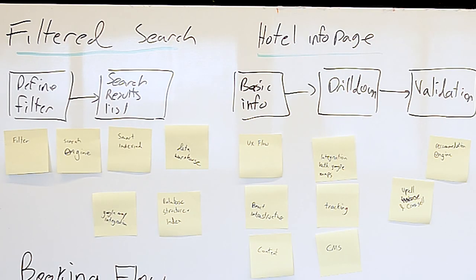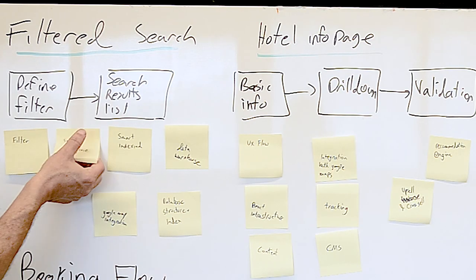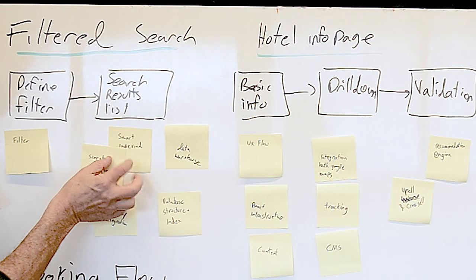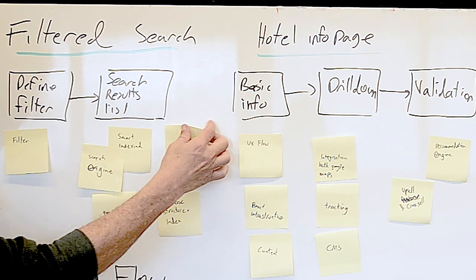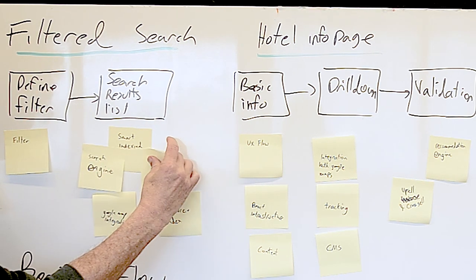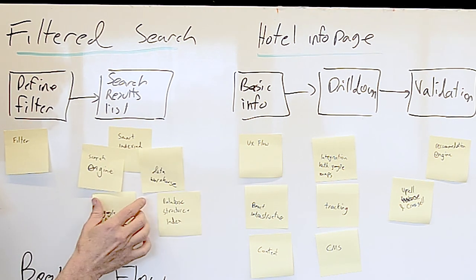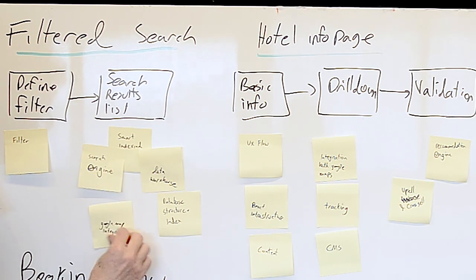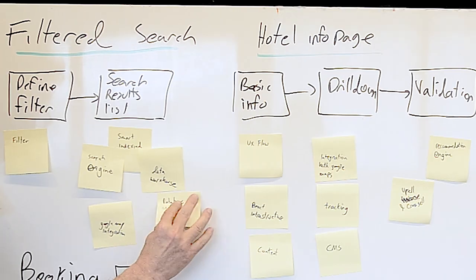Next, group the items based on dependency. For example, you can't have a search without a search engine and a content database of searchable items. Do not cluster things that are not absolutely dependent on each other.